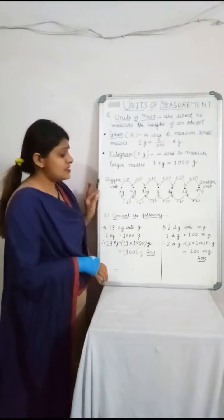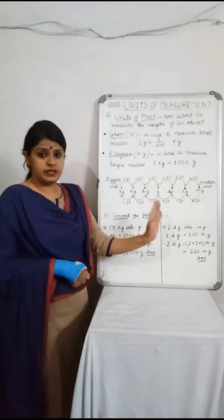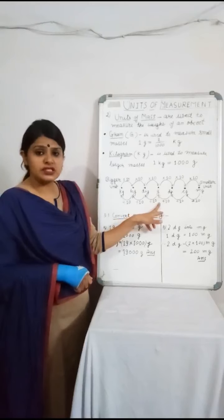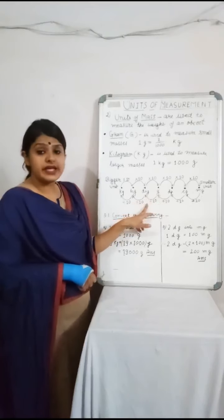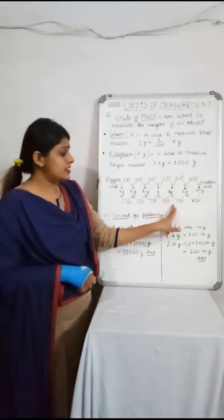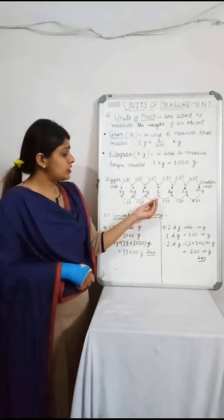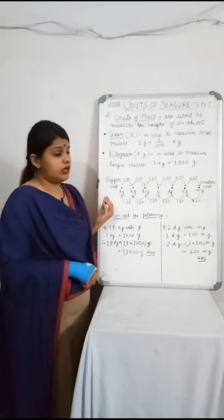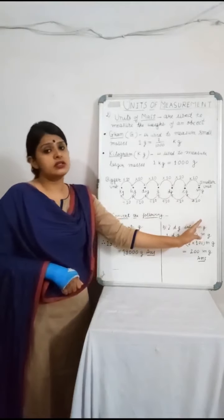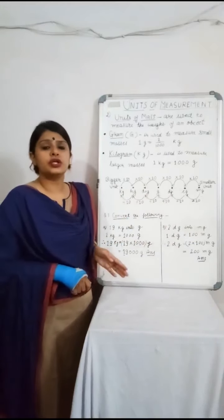This is the table which I have shown you earlier in the units of length. The table is the same, but here in the center there is grams, not meter. On the left side it is decagram, hectogram, and kilogram. On the right side it is decigram, centigram, and milligram. The units on the left of grams are bigger units and the units on the right of grams are smaller units, similar to the table we made in units of length.